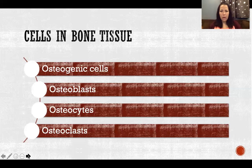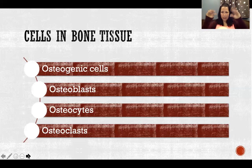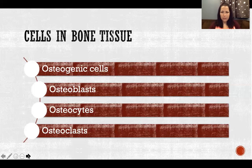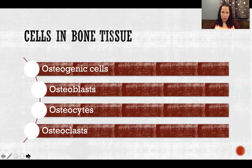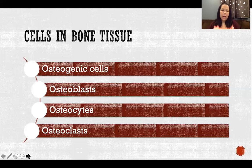Osteoclasts are a completely different cell that migrate to live in bone tissue. They're actually a type of phagocyte — the big Pac-Man cells that go around gobbling things up, cleaning up old debris, old cells, and pathogens. In the case of bone, we call these phagocytes osteoclasts. They migrate to the bone and live their whole lives there, breaking down and cleaning up bone tissue. There needs to be a balance between osteoblast building and osteoclast breakdown — that's how we remodel and maintain healthy bone tissue.